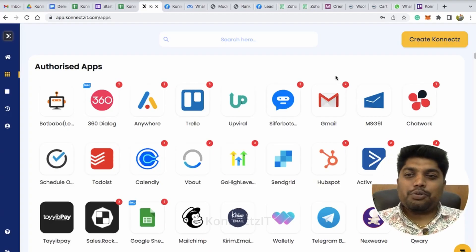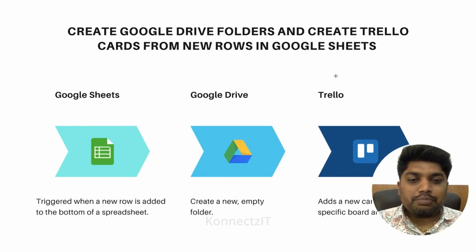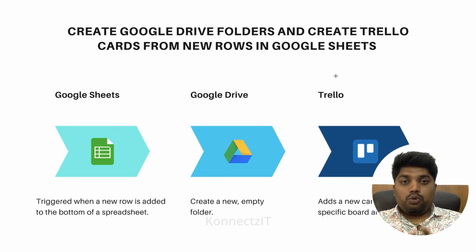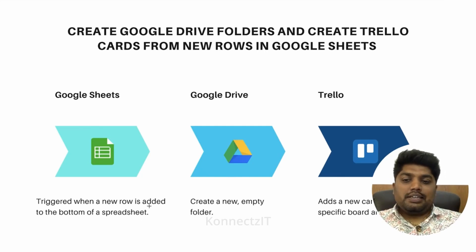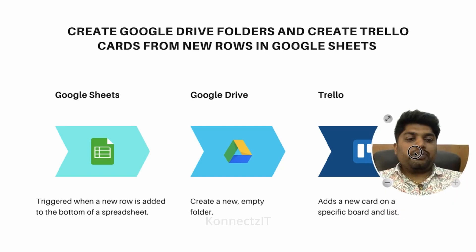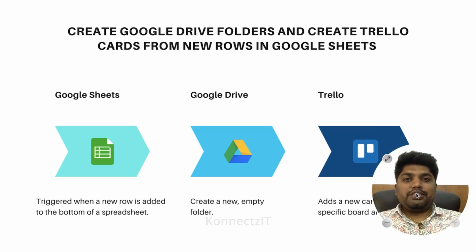I wanted to create a use case which looks something like this: create Google Drive folders and create Trello cards from a new row inside Google Sheets. Basically, whenever a new row is added to the bottom of a spreadsheet, I'm going to create a new empty folder on Google Drive and also add a new card to a specific board and list on Trello.